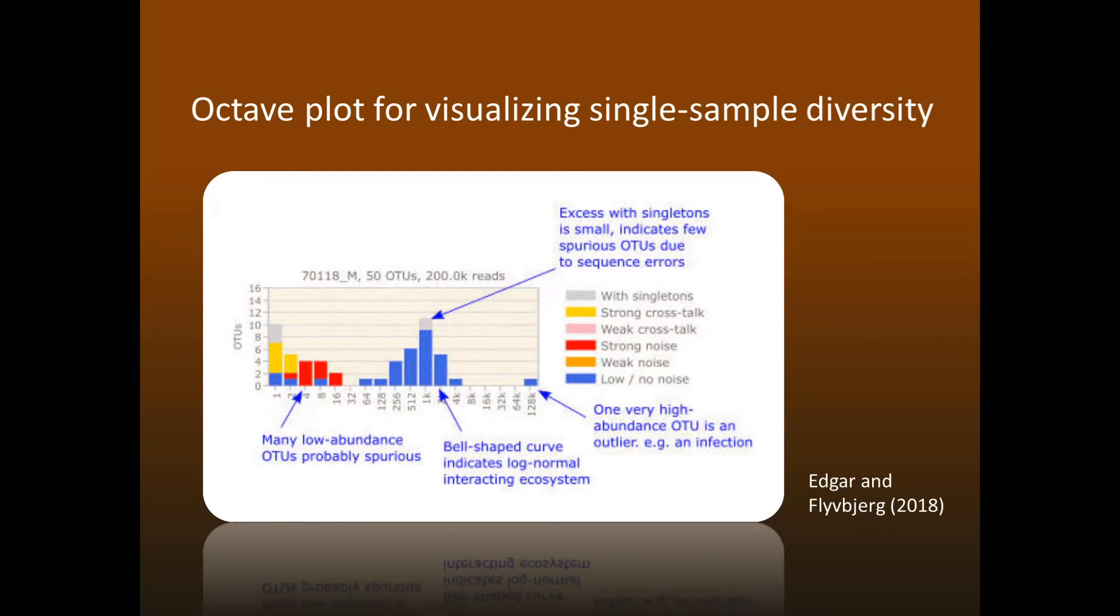As we've seen, traditional methods for measuring the diversity within a sample simply don't work. To address this, I developed octave plots in collaboration with my Danish colleague, Henrik Flubier. These are histograms of OTU abundance distributions similar to Preston plots in traditional ecology, with added features to account for errors and biases due to PCR and sequencing. They provide an effective alternative to rarefaction for judging how much of the total diversity has been sampled, and can also reveal outliers such as infection and spurious apparent diversity due to crosstalk, chimeras, and other errors. I don't have time to describe octave plots in detail. You can read the paper if you're interested in learning more.